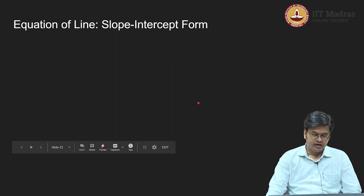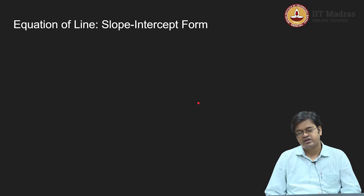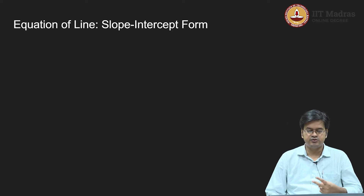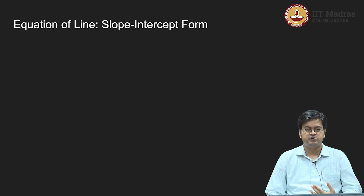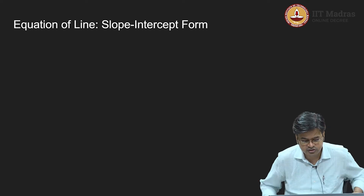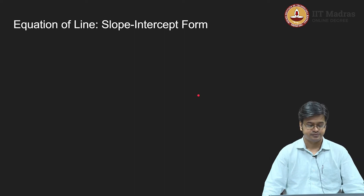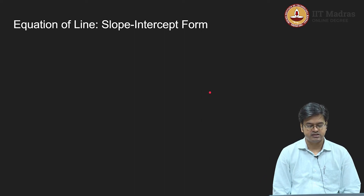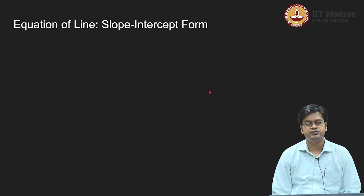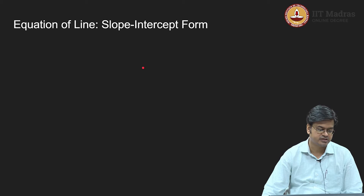Let us go ahead and try to figure out some special variations where the calculations become extremely easy. These two forms are primarily two-point form and slope-point form. When you consider slope-point form, you can also consider a special case that is slope-intercept form. This is the methodology that we will use for considering slope-intercept form. Before that, let me define what an intercept is.